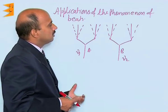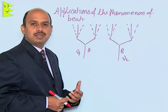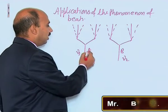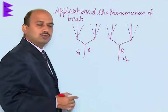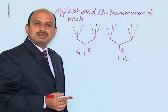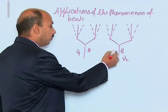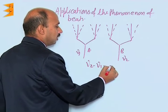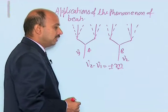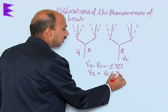To see the phenomenon of beats, we can use it to determine the unknown frequency of a given tuning fork. There are two tuning forks: A, whose frequency is nu1, and B, whose frequency is nu2. When these two tuning forks are sounded together, beats are formed. We can write nu2 minus nu1 equals plus or minus m, where m is called the beat frequency or the number of beats per second. So we can write nu2 equals nu1 plus or minus m.